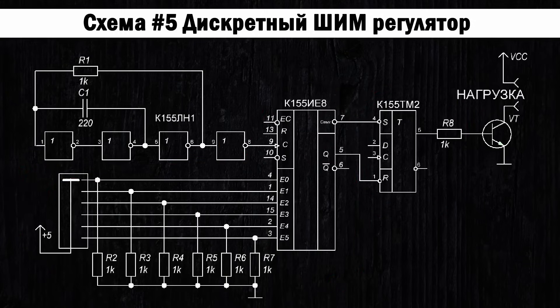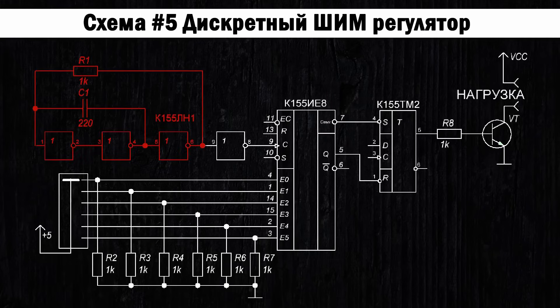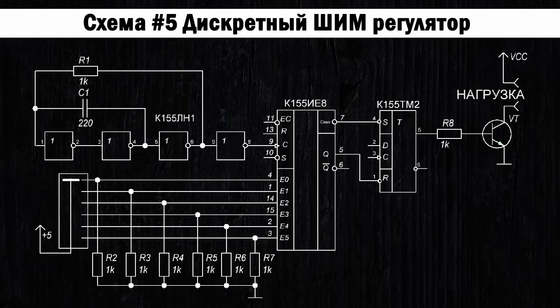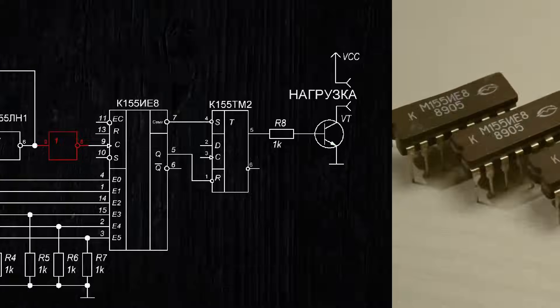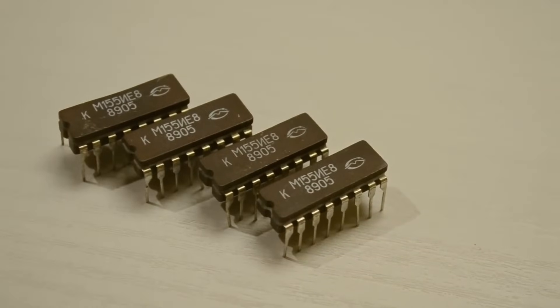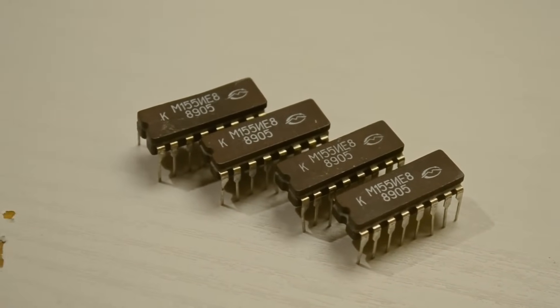Let's figure out the circuit. The reference frequency generator is built on the basis of three NOT elements. By varying the capacitance, you can achieve the desired PWM frequency. The greater the capacitance, the lower the frequency. From the fourth NOT element, which acts as a buffer, a signal of a certain frequency goes to the K155 counter. Let's take a look at its truth table.